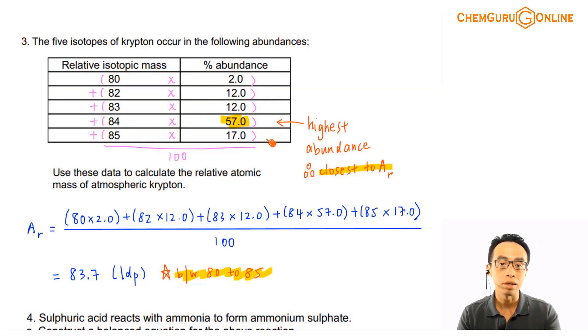then we will just call this the relative abundance. So naturally occurring, how many percent of each isotope that I can find in a sample of Krypton, that would be the percentage abundance.